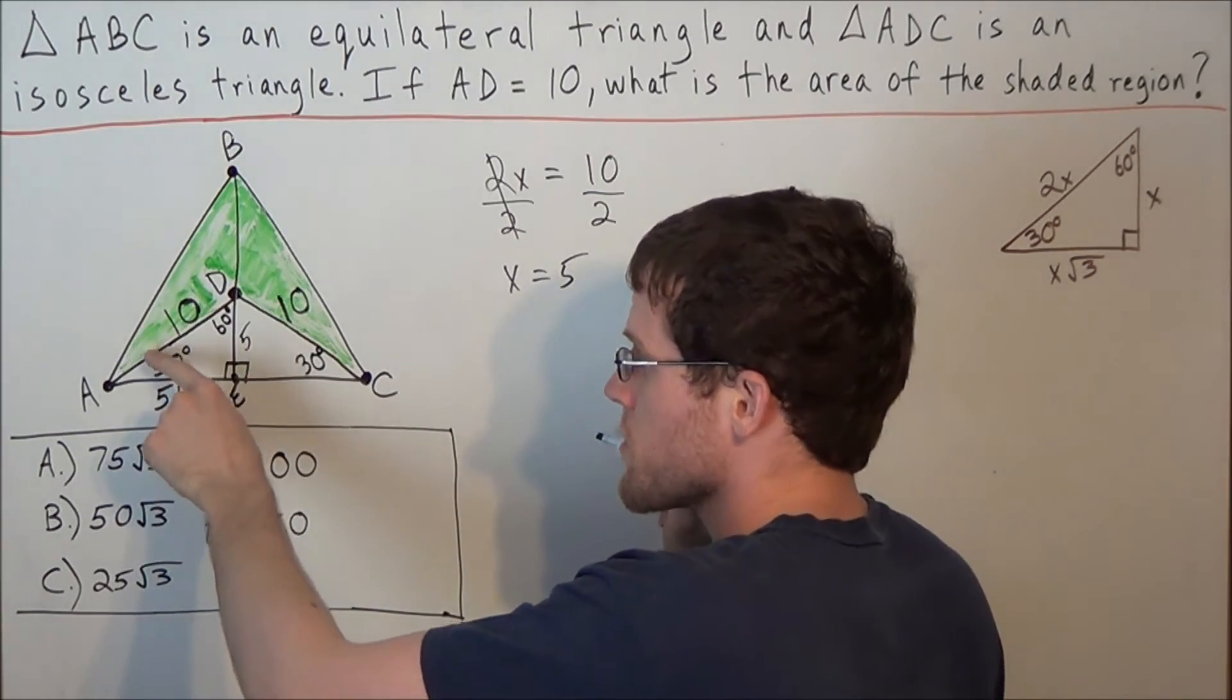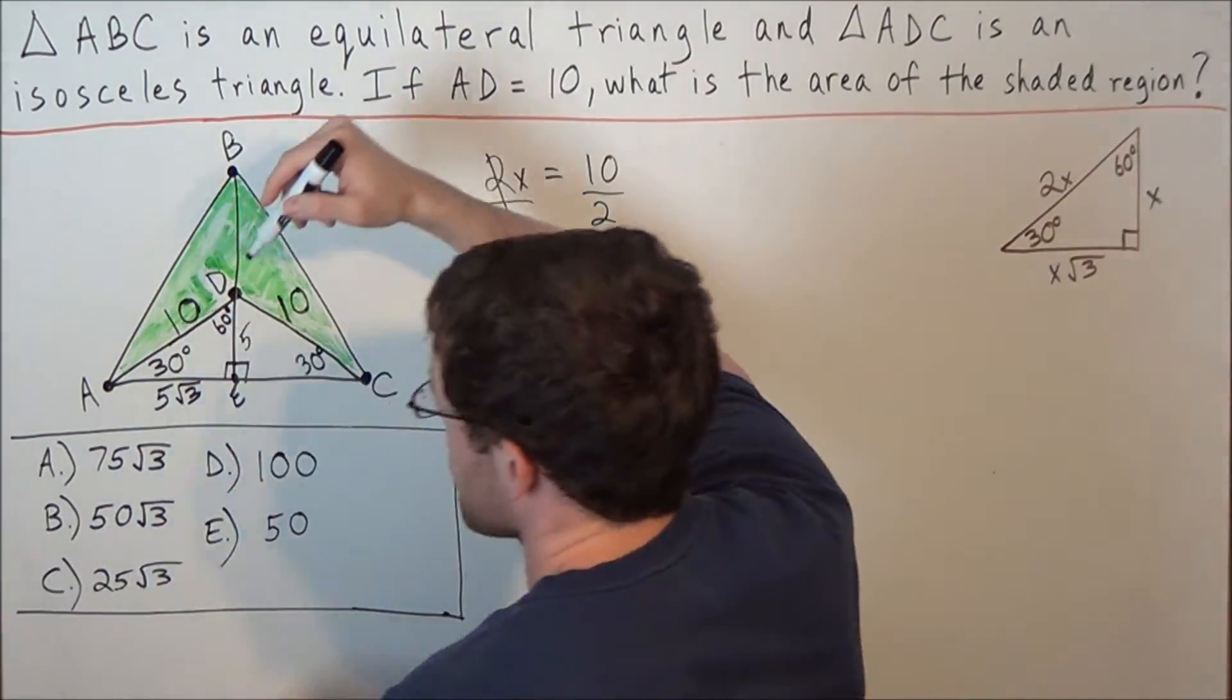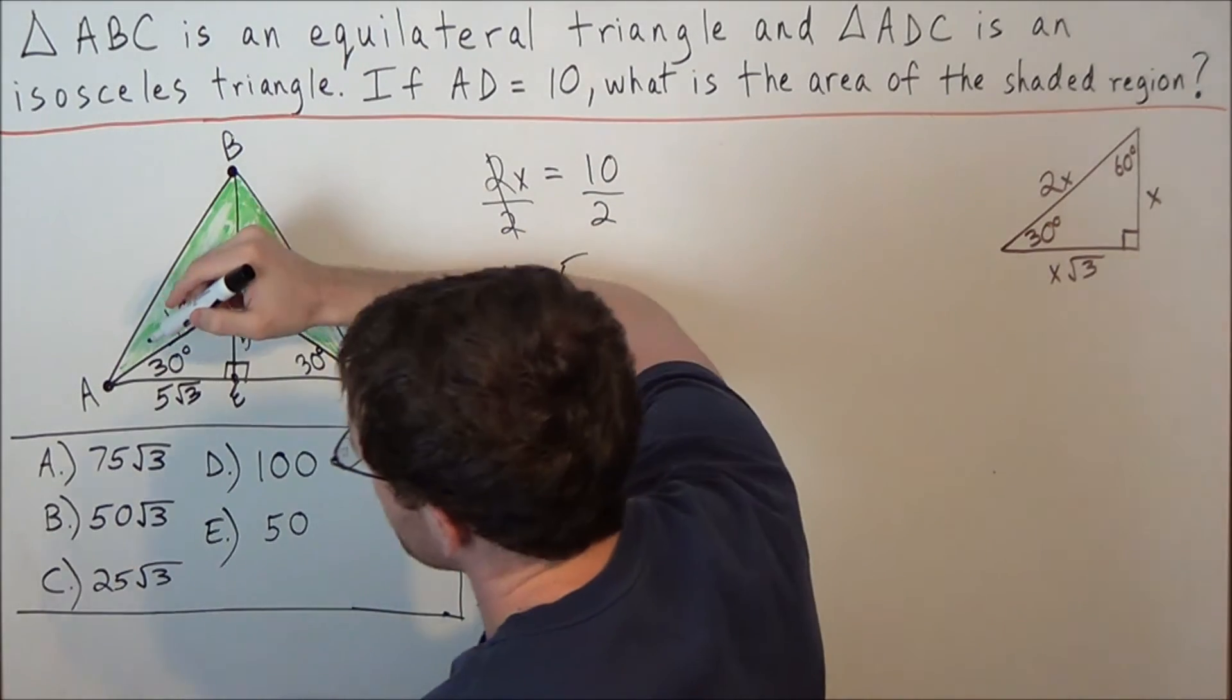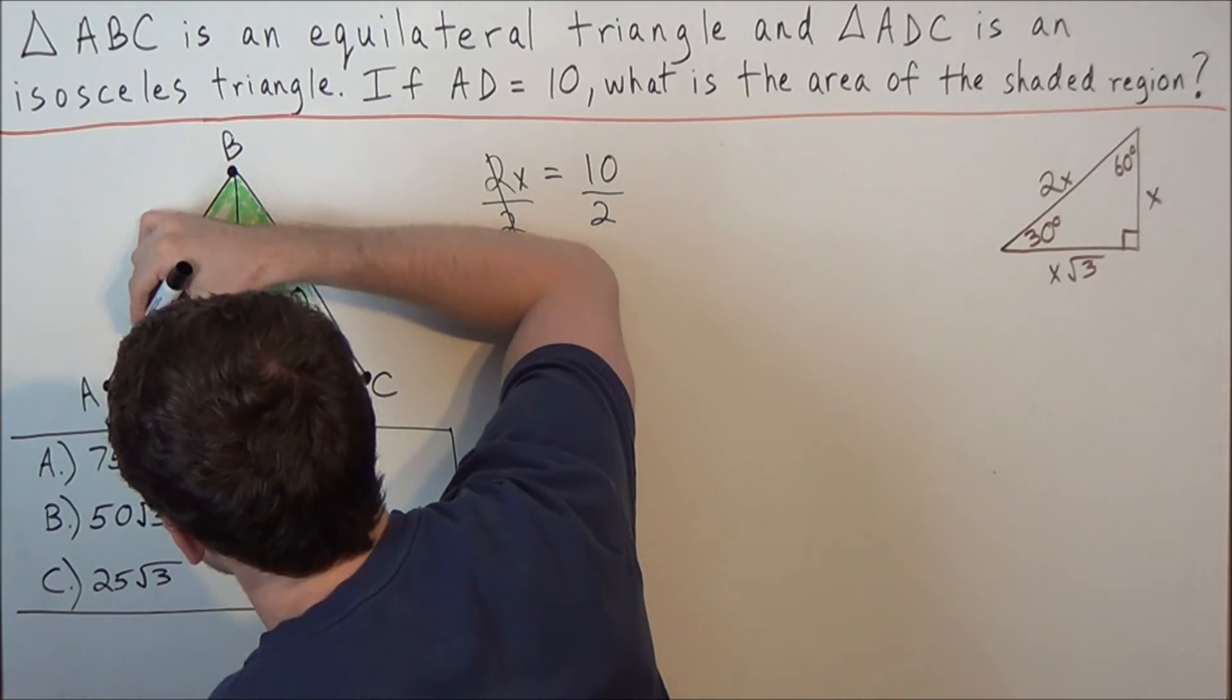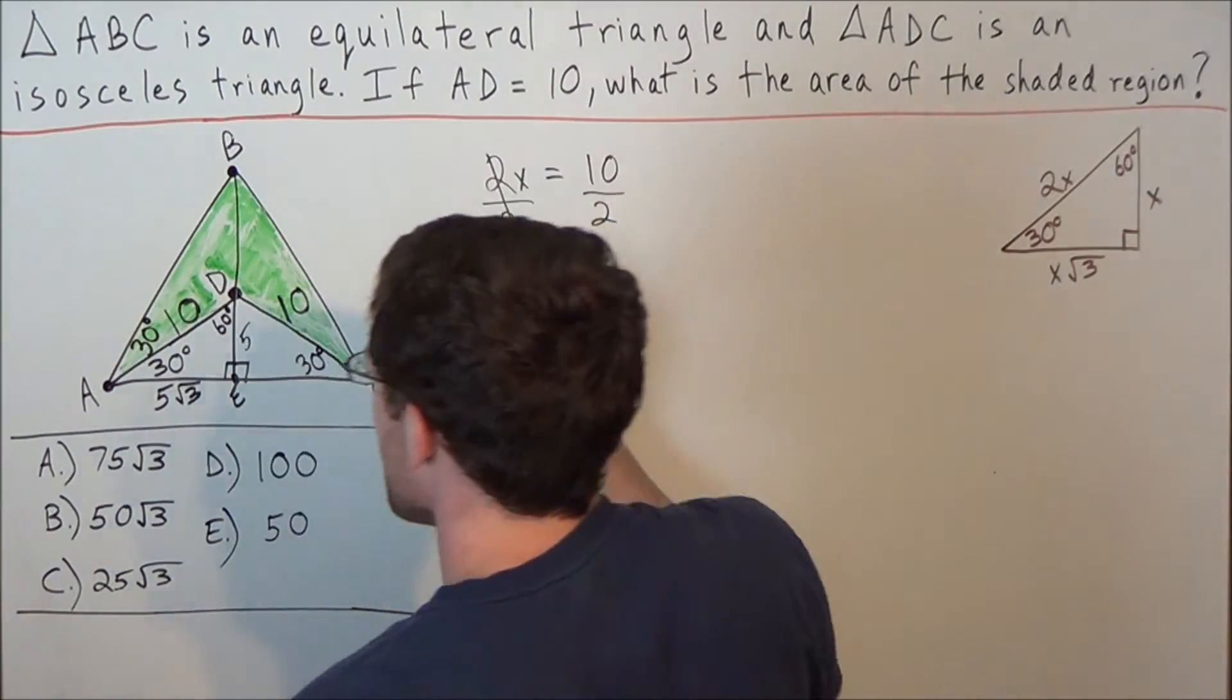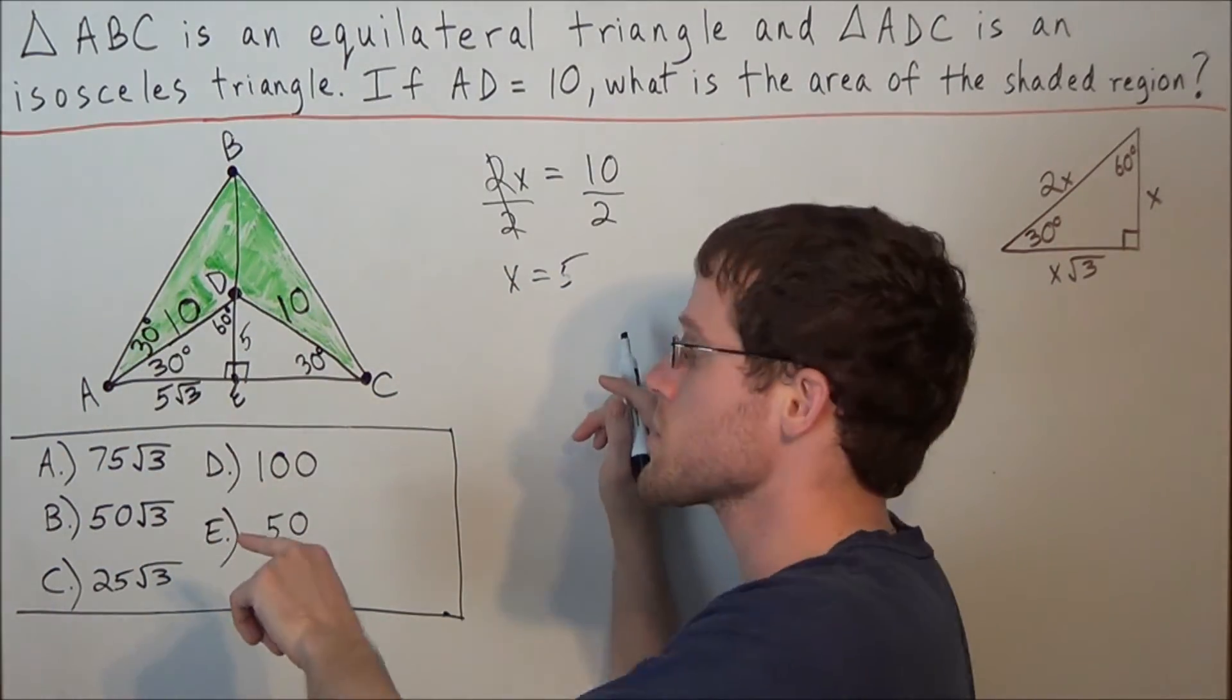So if this piece here is 30 degrees, then this piece BAD, that angle also has to be 30 degrees. Because in total, this whole angle has to be 60 degrees.